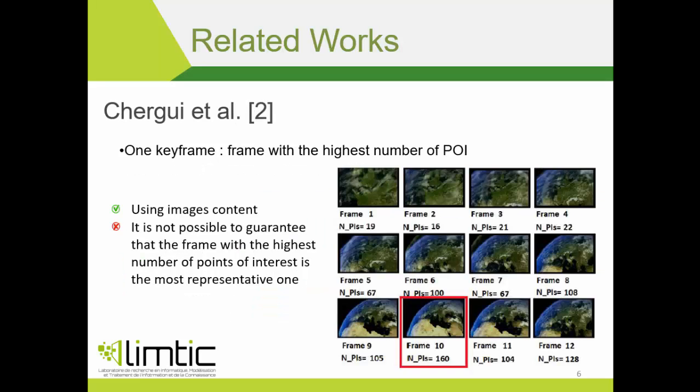Shou also adopted one keyframe, which is defined as the frame with the highest number of points of interest in the shot. Despite using image content, it is not possible to guarantee that the frame with the highest number of points of interest is the most representative one in all cases. Besides, one image may not be enough to describe the diverse content of some shots and important information can be lost. This method is also more computationally demanding because the selection step involves processing all shot frames.